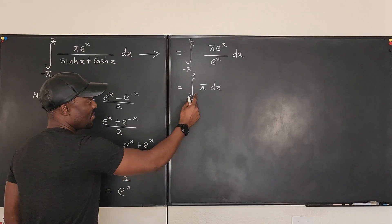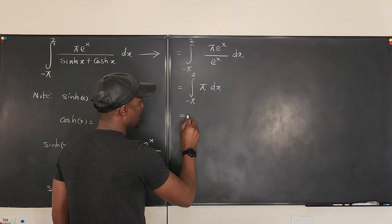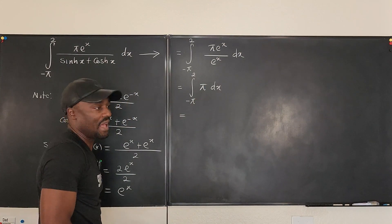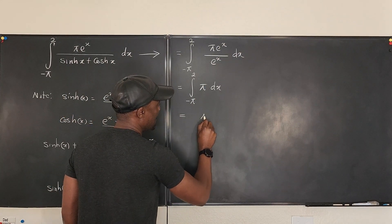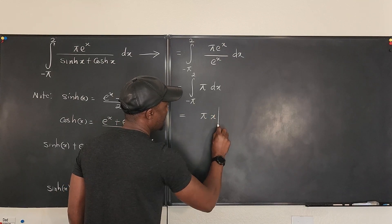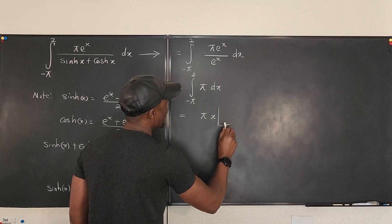And we can integrate this. If I integrate π, what do I get? I get πx. Just bring back the x. It's going to be πx evaluated from -π to 2.